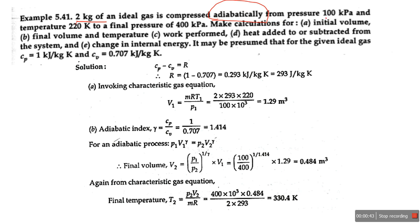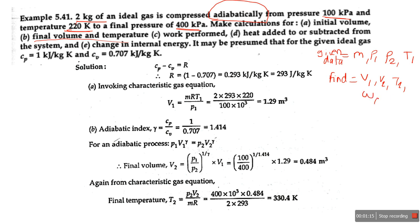The problem: 2 kg of an ideal gas is compressed adiabatically from pressure 100 kilopascal and temperature 220 Kelvin, and the final pressure is 400 kilopascal. Given are mass, initial pressure, final pressure, and initial temperature. We need to find initial volume V1, final volume V2, final temperature T2, work performed, heat added or rejected, and change in internal energy. For the adiabatic index, we must first calculate gamma, which is the ratio of CP upon CV.